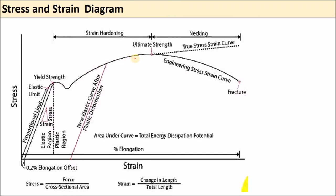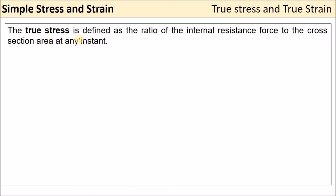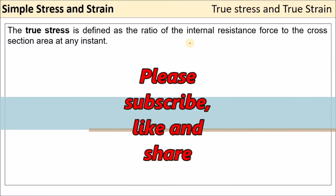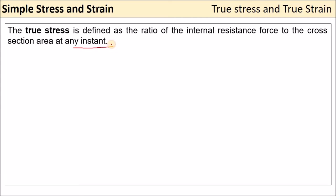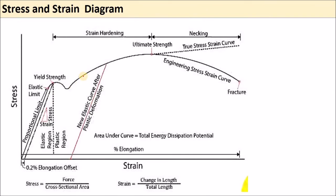True stress is defined as the ratio of the internal resistance force to the cross-section area at any instant — meaning with respect to time. Up to a certain point there is no necking; after necking, stress equals load divided by actual area at that particular time.